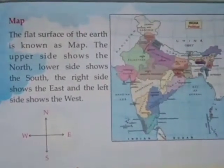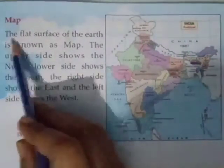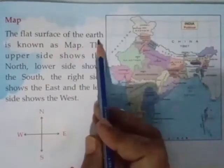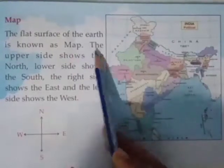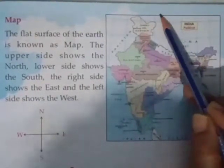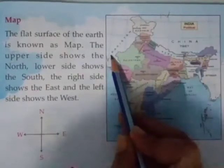Next topic is map. Map क्या होता है? The flat surface of the earth is known as a map. Earth का जो flat, सपाट surface होता है, उसको हम map बोलते हैं. The upper side shows the north, lower side shows the south. यह right side east है और left side west. यहाँ पर दिखाया भी गया है — North ऊपर, South नीचे, right में East, और left में West.